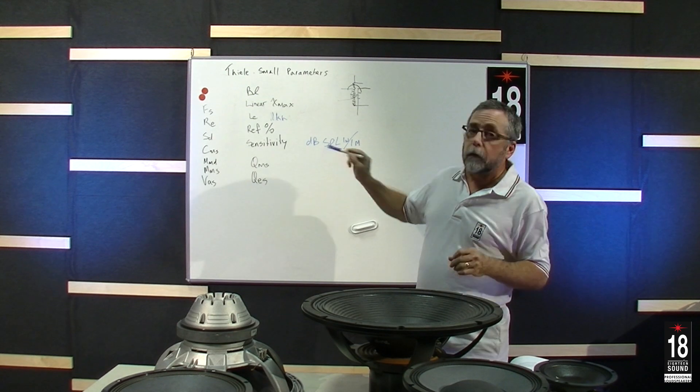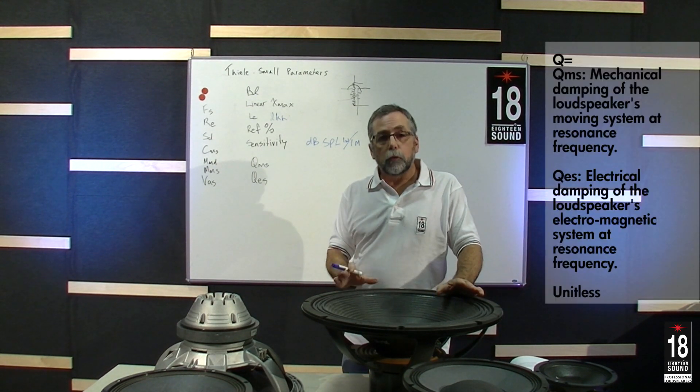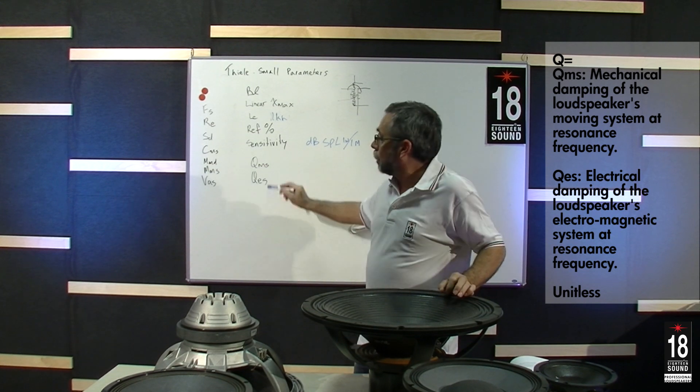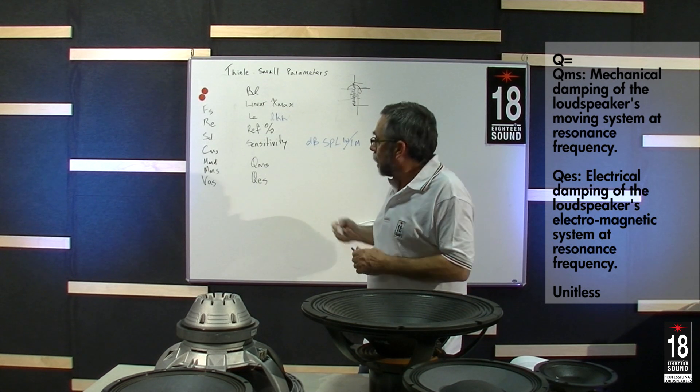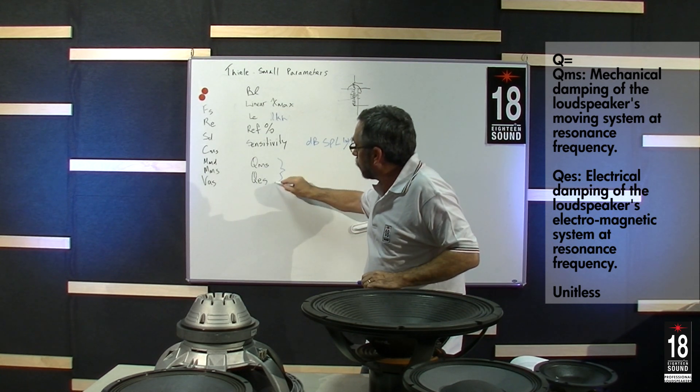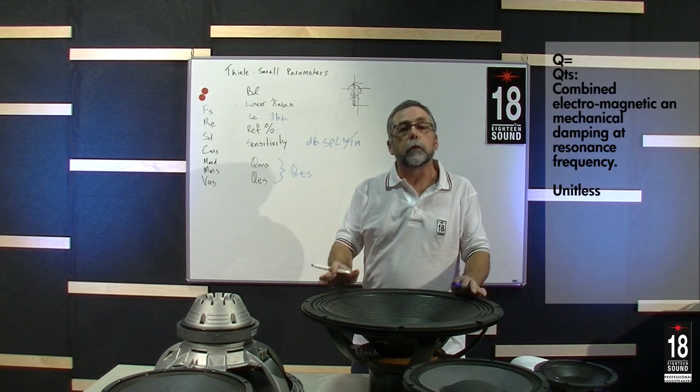Finally, we'll come around to Q. The Thiel-Small parameters have two Q factors. Mechanical Q we define as QMS and electrical Q as QES. And together, we sum them to have a total Q referred to as QTS.